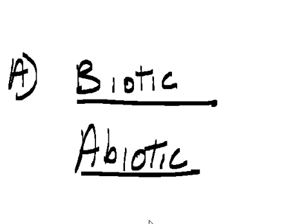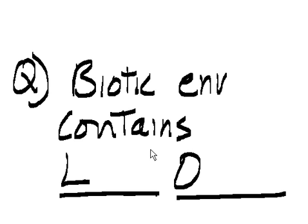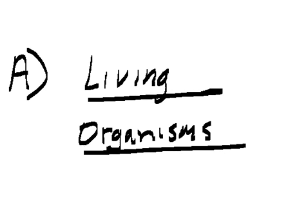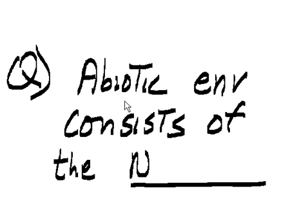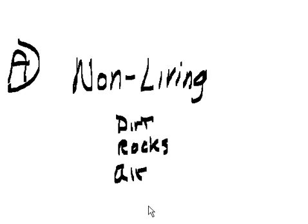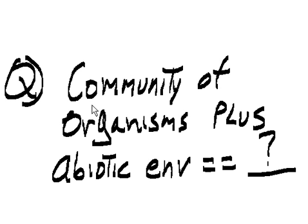Biotic and abiotic. The biotic environment contains living organisms. The abiotic environment consists of the non-living — dirt, rocks, air... zombies. Okay, no zombies. Question: a community of organisms plus an abiotic environment equals what? An ecosystem.